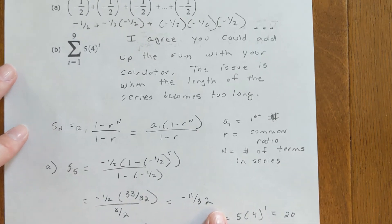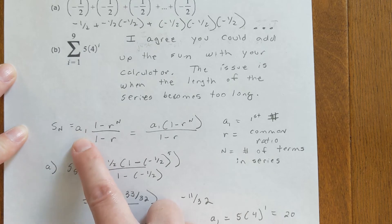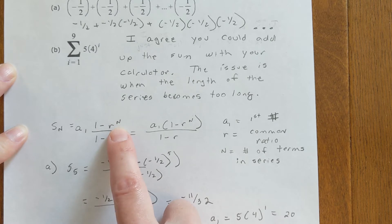If you want to use the formula, S of n, the sum of the n terms in the sequence is a₁, the first term in the sequence, times 1 minus r to the n, divided by 1 minus r, where r is the common ratio and n is the number of terms in the geometric sequence.